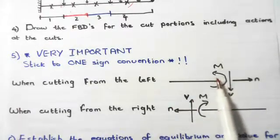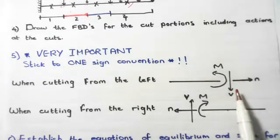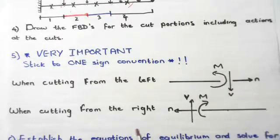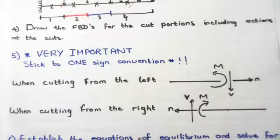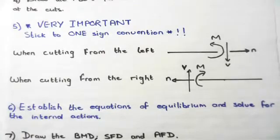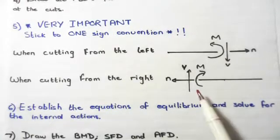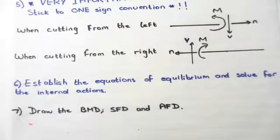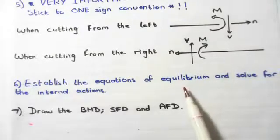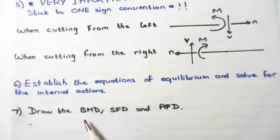To summarize the sign convention: cutting from the left gives an anti-clockwise moment, shear force pointing down, and axial force pointing to the right. Cutting from the right gives a clockwise moment, shear force pointing up, and axial force pointing to the left. The sixth step is to establish equations of equilibrium of the internal actions using sum of forces and moments equal to zero, from which we can draw the bending moment, shear force, and axial force diagrams.